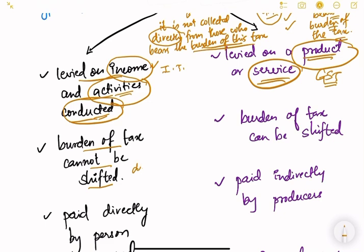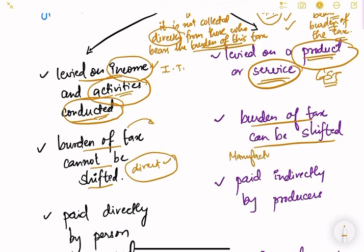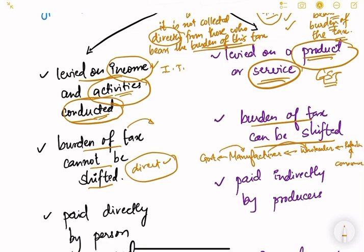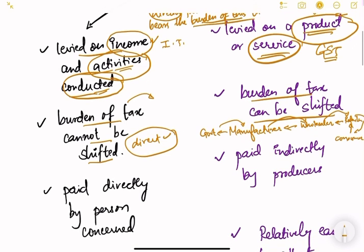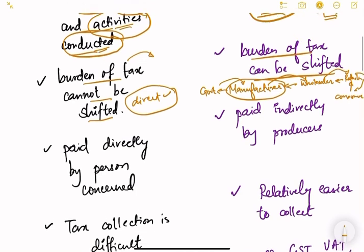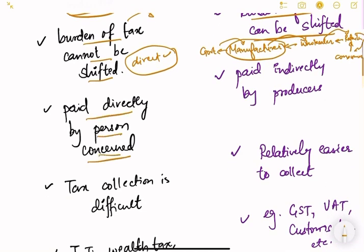In direct taxes, the burden of tax cannot be shifted because whoever bears the burden directly pays the tax. But in indirect taxes, the burden can be shifted. For example, the manufacturer first pays the tax to the government, but then collects it from the wholesaler; the wholesaler collects it from the retailer; the retailer collects it from the consumer. So the burden keeps shifting along the supply chain, even though the manufacturer pays the government directly.